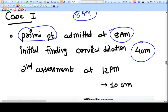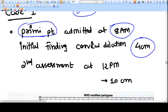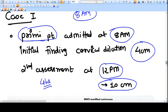You assessed her at 12 PM again after four hours. You see cervical dilatation is 10 centimeters. Now you have to put the partogram. Whenever you see the patient at 4 centimeters first time, you have to start the partogram.